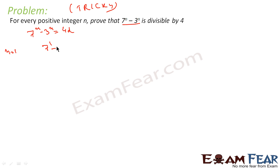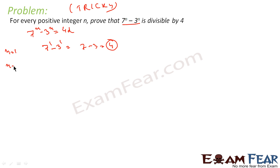For n equal to 1: 7 to the power 1 minus 3 to the power 1 equals 7 minus 3 equals 4. So we can see 4 is a multiple of 4.